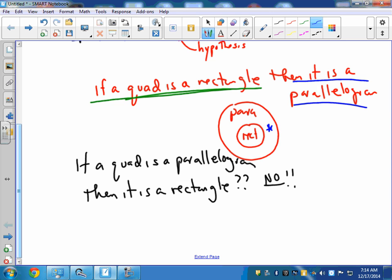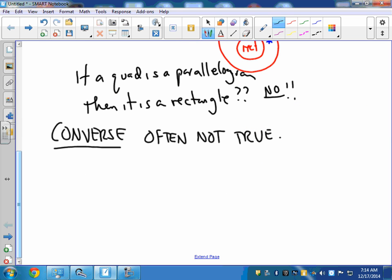Okay, so when we swap the hypothesis and the conclusion, this is called the converse. And oftentimes the converse of a statement is not true. Often not true, even though the original statement is true.